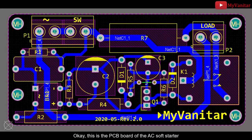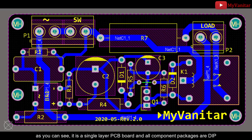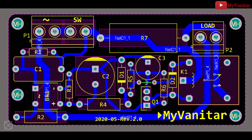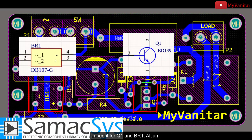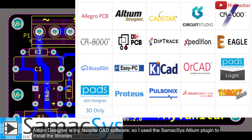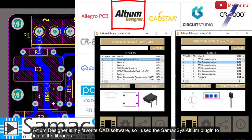Okay, this is the PCB board of the AC soft starter. As you can see, it is a single layer PCB board and all component packages are DIP, pretty easy for everyone, even the beginners, to build this circuit. As usual, I use the SamacSys component libraries for this design. Also I used it for Q1 and BR1. Altium Designer